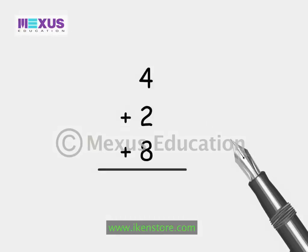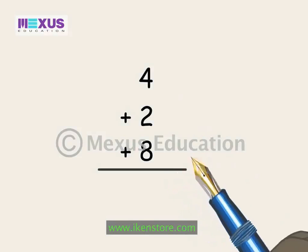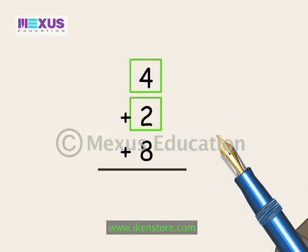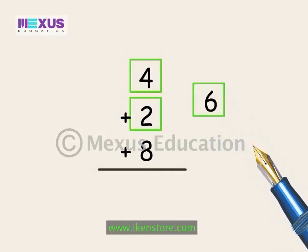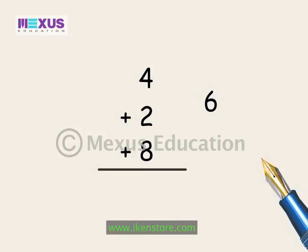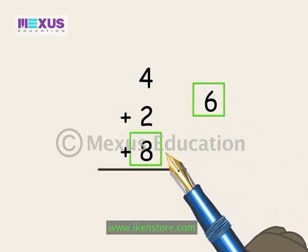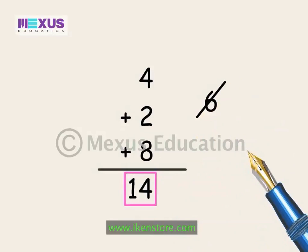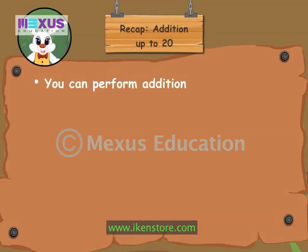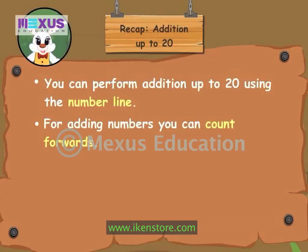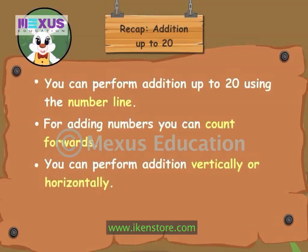Now, let's add the numbers vertically. You both have to tell me how to add. First, we add the numbers 4 and 2, and remember or write the answer 6 besides the question. Now, add the answer 6 with the 3rd number. So, 6 plus 8 is 14. Come on, let's revise the concepts we learnt. You can perform addition up to 20 using the number line. For adding numbers, you can count forward. You can perform addition vertically or horizontally. You can use addition to solve real life problems.